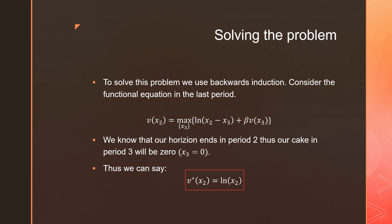To solve this problem we need to use backwards induction. Consider the functional equation of the last period: V_2 equals maximizing this Bellman equation where our choice variable is X_3, the cake size in period 3. We know that our horizon ends in period 2, thus our cake in period 3 will be 0.